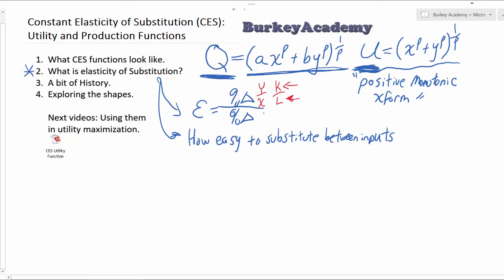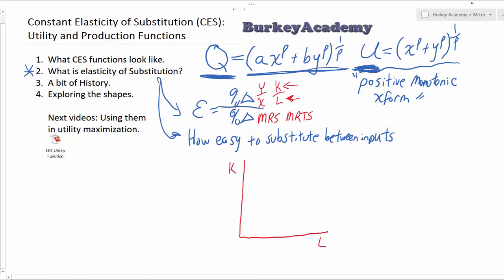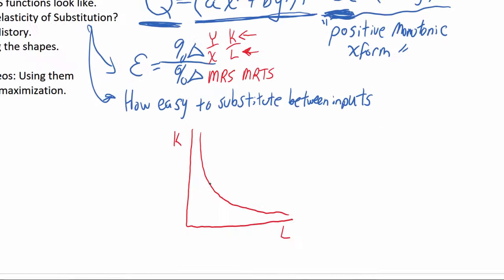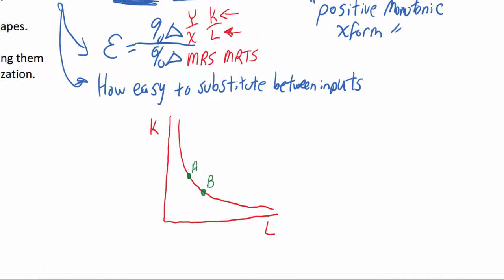What we're talking about here is the percent change in the marginal rate of technical substitution. To visualize this, let's talk about labor and capital. If we have an isoquant telling us a certain amount we want to produce — or this could be an indifference curve in a utility framework — if we move between two points on this curve, between point A and point B, the elasticity of substitution asks: what's the slope of that curve doing? What's happening to the slope at A compared to the slope at B? Let's say the slope here is 2 and here the slope is 1.